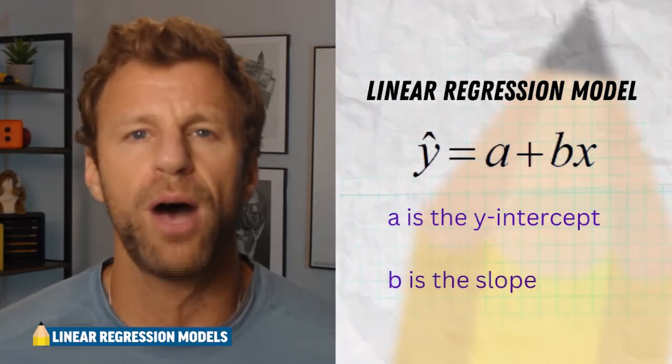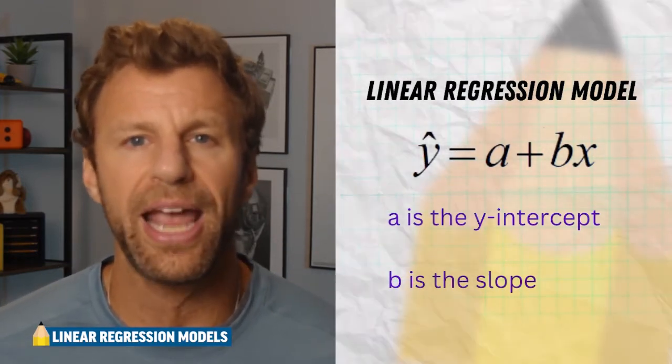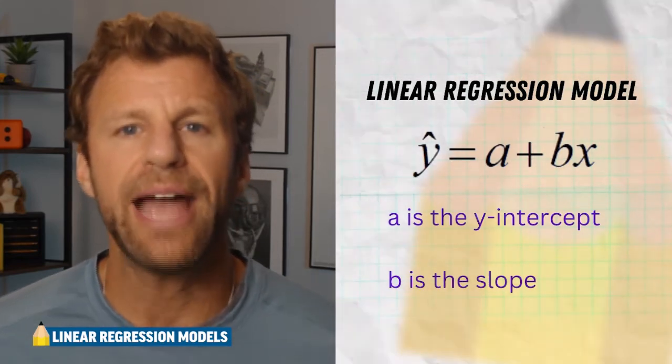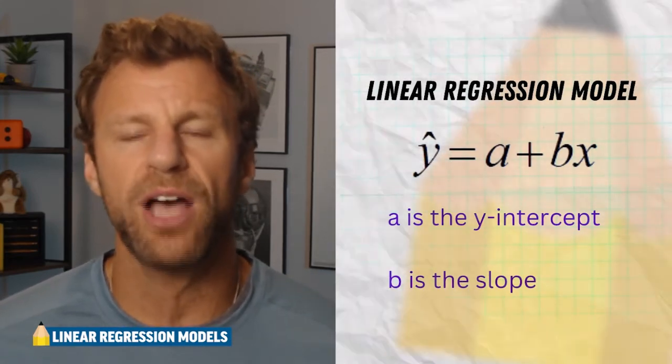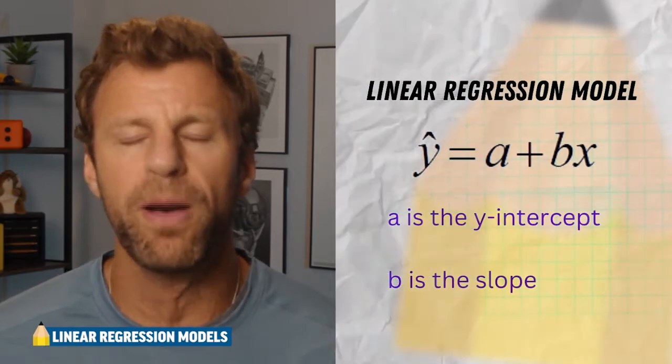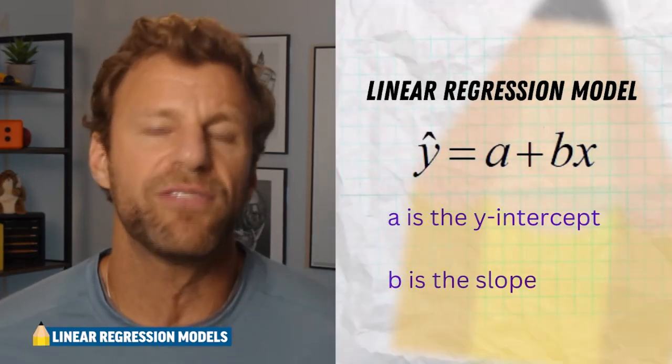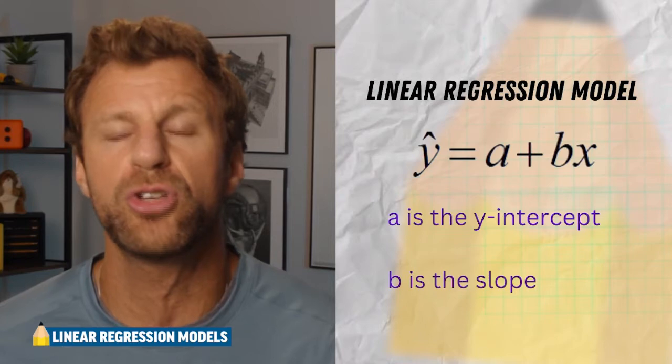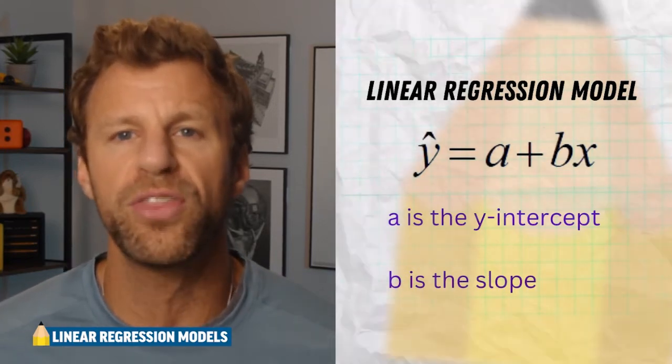Here is that linear regression model: y hat equals a plus bx. Now, a is the y-intercept of the linear equation and b is the slope of the linear equation. X is obviously the explanatory variable that we're going to use to try to make a prediction for the y variable.